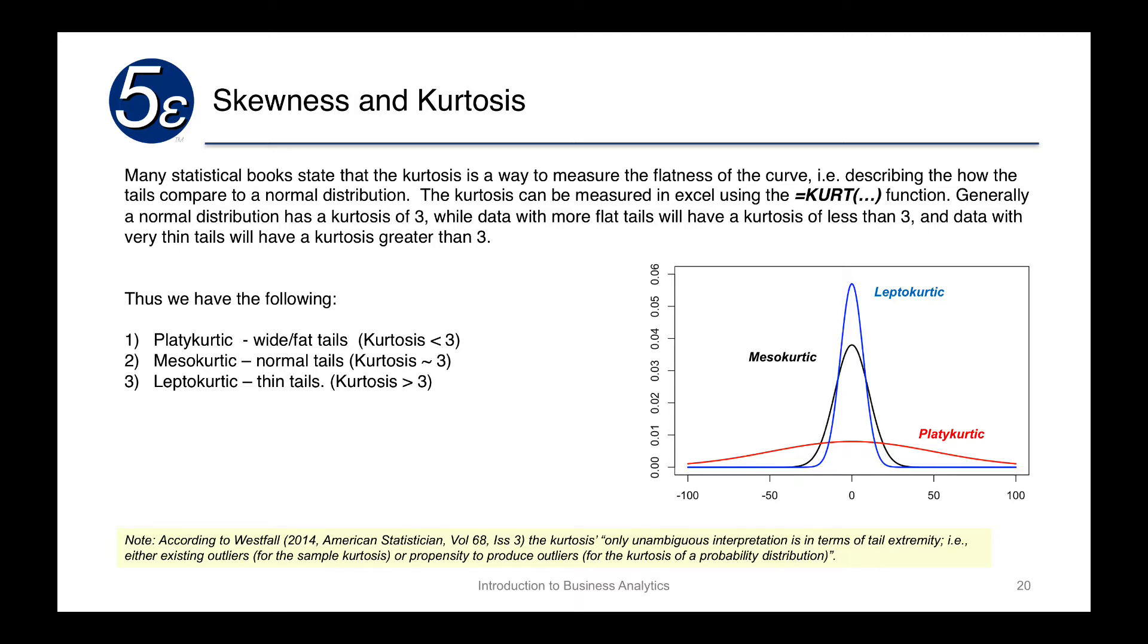Either existing outliers or the propensity to produce outliers. So this is a very deep statistical concept. But the author is trying to change some of the perceptions that have been written in statistical books about kurtosis itself. So it's really a measure to understand, and I would say the easiest way is the propensity to produce outliers.